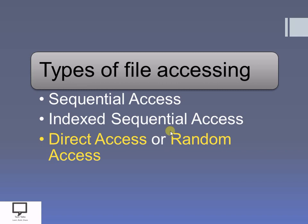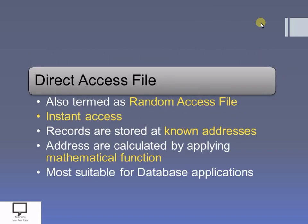If you want to know more detail about sequential access file or index sequential file, I am providing you a shortcut link for the playlist of types of files in C++. Now let's move forward to the concept of direct access file. As I explained previously, this direct access file is also called a random access file because in this file we can access any of the records directly or randomly.